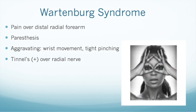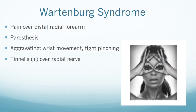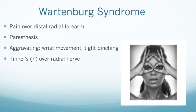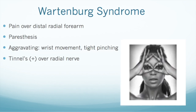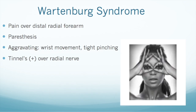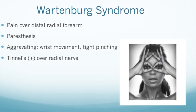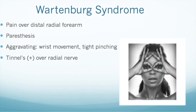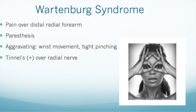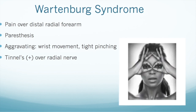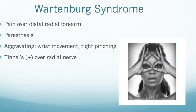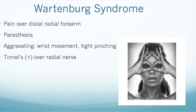To differentiate between Wartenberg syndrome and de Quervain's tenosynovitis, you can use the xylocaine injection method discussed earlier. Here, if the symptoms are relieved but numbness still ensues, then it is positive for Wartenberg syndrome. These patients will be aggravated by any kind of wrist movement or tight pinching, and they will have a positive Tinel's test over the radial nerve.